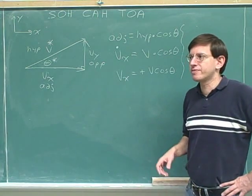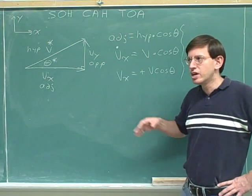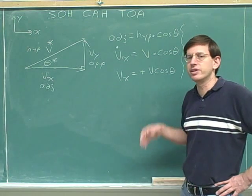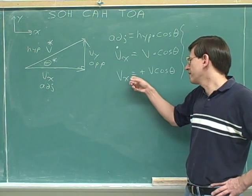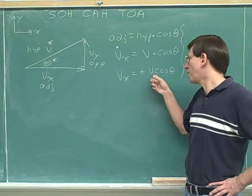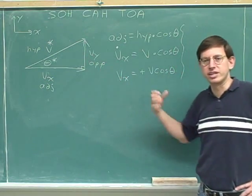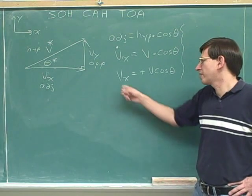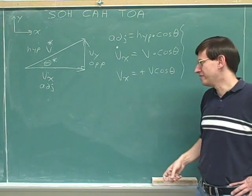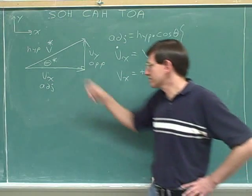Remember that you always have, on this type of problem with only variables, you have to have answers that involve only the givens. So this would not be a good answer if there was a v sub y on the right hand side, because v sub y is an unknown. We have to get an expression for this unknown that's only in terms of the original givens, v and theta.